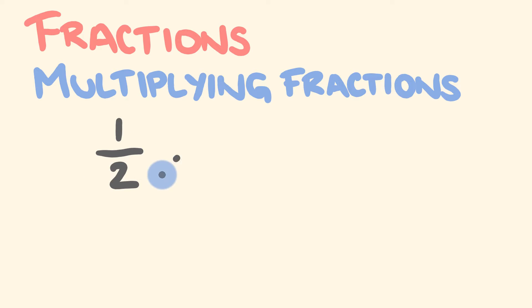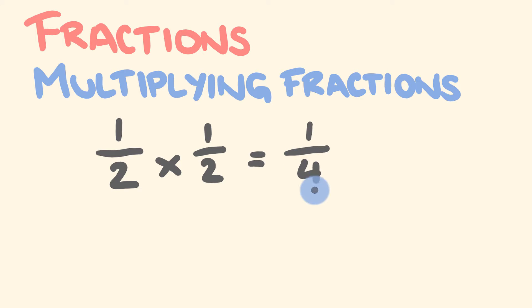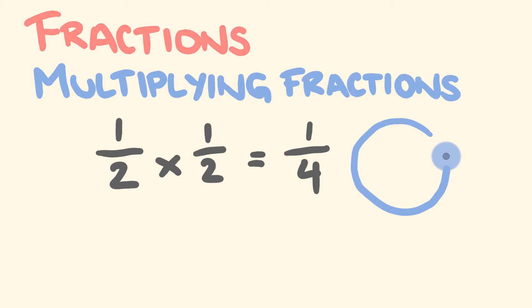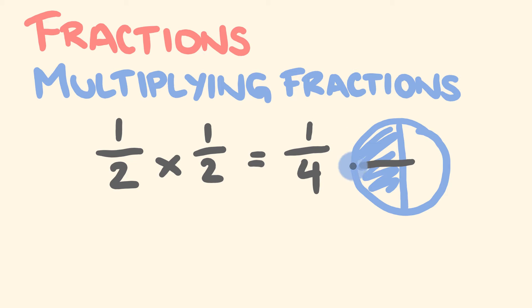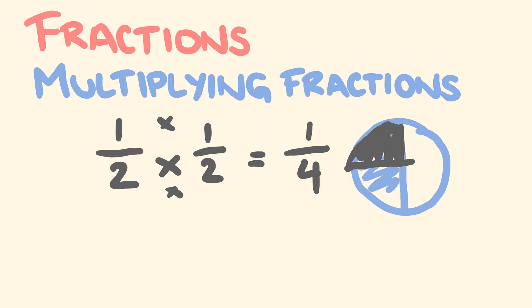My older brother asked me what a half times a half is. I thought it was one, but that's incorrect — a half times a half is a quarter. What we've done here is the numerator times the numerator and the denominator times the denominator: one times one is one, two times two is four. If we draw one half, what we're really working out is a half of that half, and you can see that a half of a half is a quarter. So it's simply top number times top number, bottom number times bottom number.